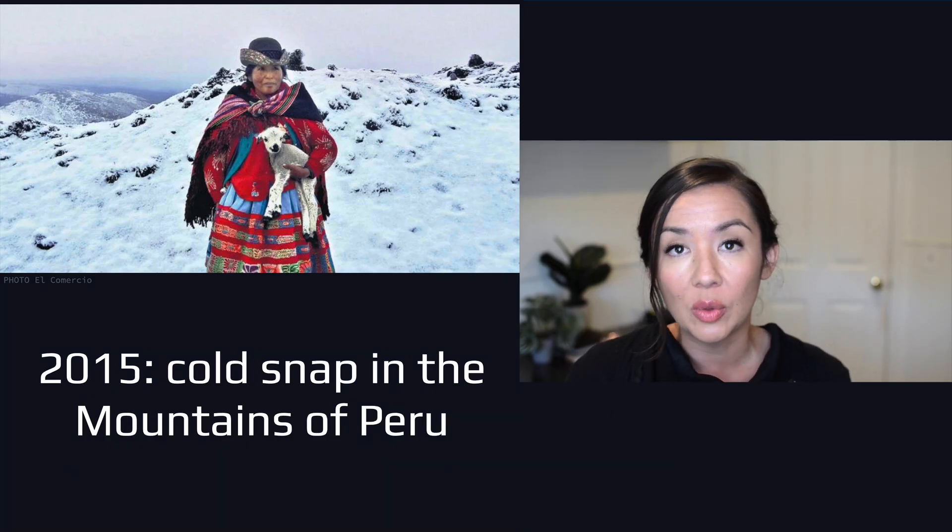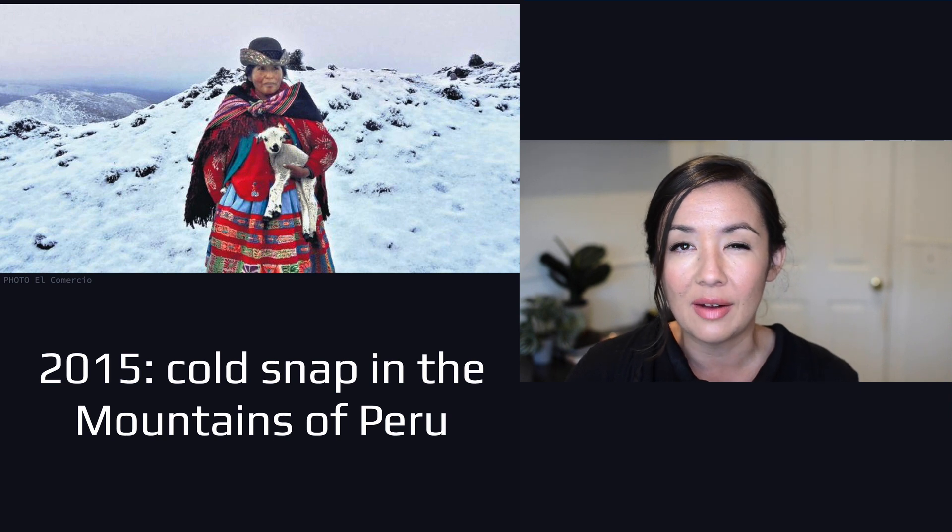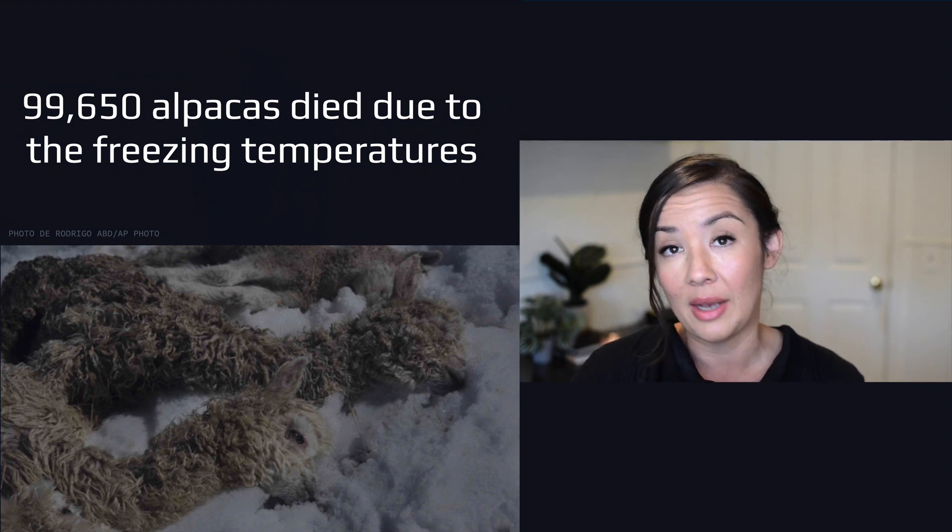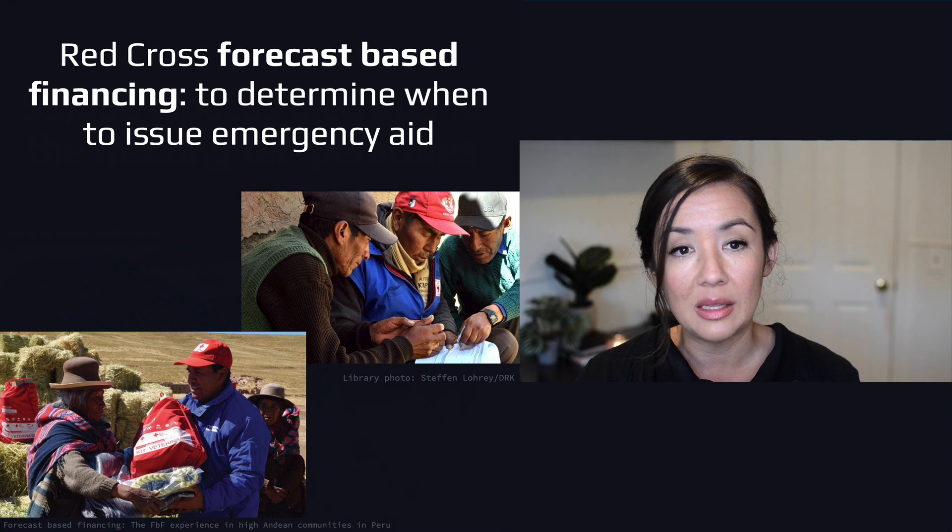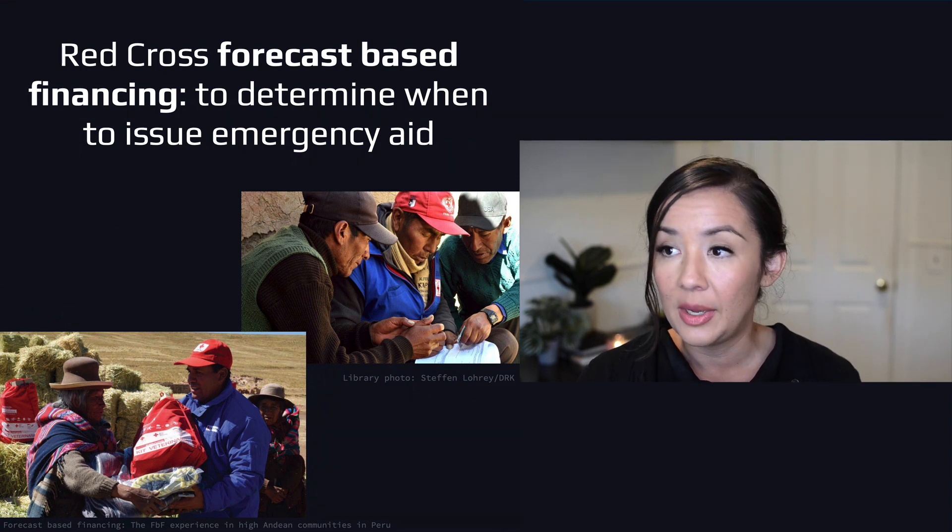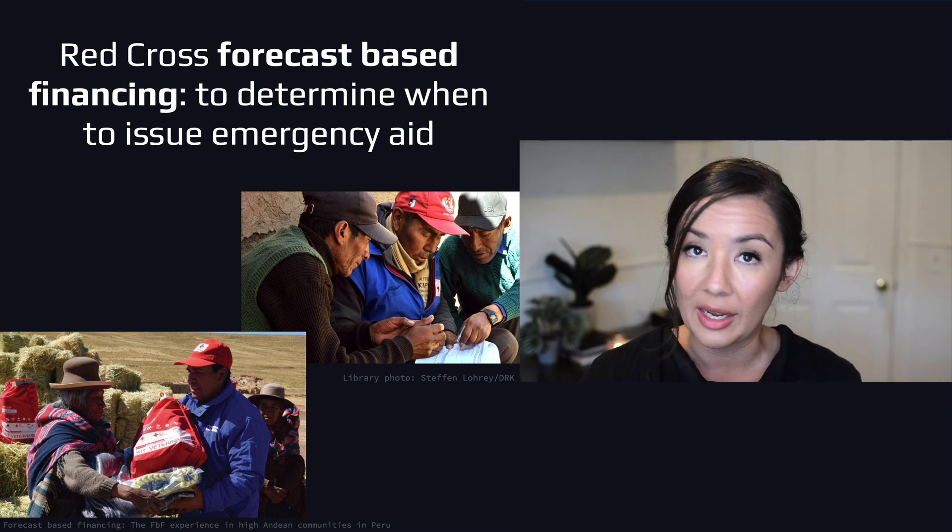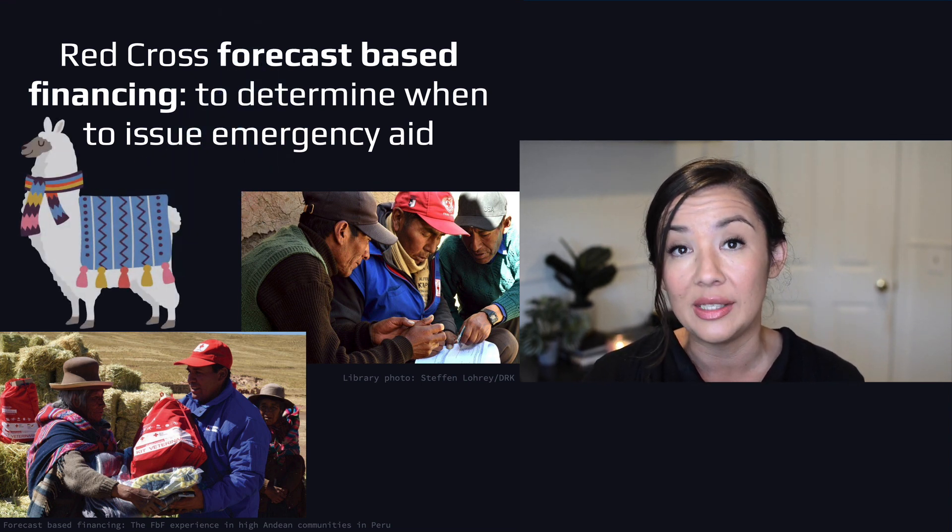In 2015, Peru had an extreme cold weather event where the high mountains were completely covered in snow and very cold temperatures. This resulted in over 90,000 alpacas passing away. I collaborate with people at the Red Cross and they gave me this story about having to develop a forecast-based financing system, wherein they use short and long-term weather forecasting models to decide when to issue emergency aid to these alpaca farmers.